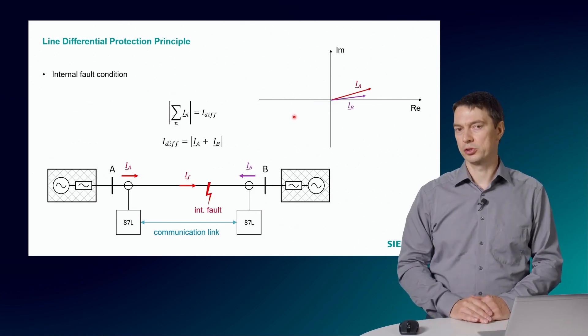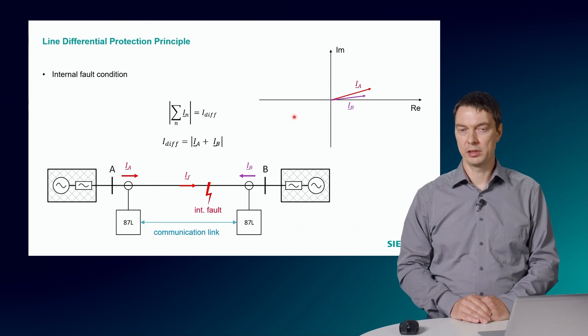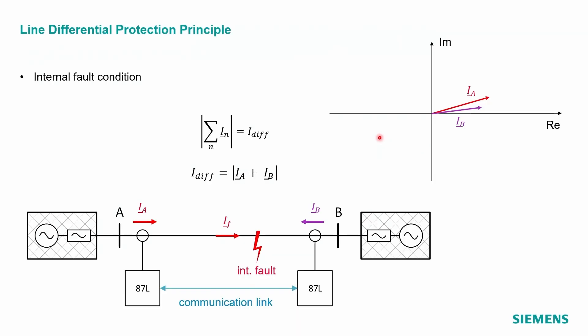For the internal fault condition, the phasor measured at the terminals A and B appear in the same direction on the complex plane. The sum of both phasors will result in a very big differential current. Here we also consider some CT errors, which are expressed by the circles at the top of these phasors. For the internal fault condition, these errors are not so important as the differential current amplitude is very high and the relay will typically operate and trip the circuit breaker.